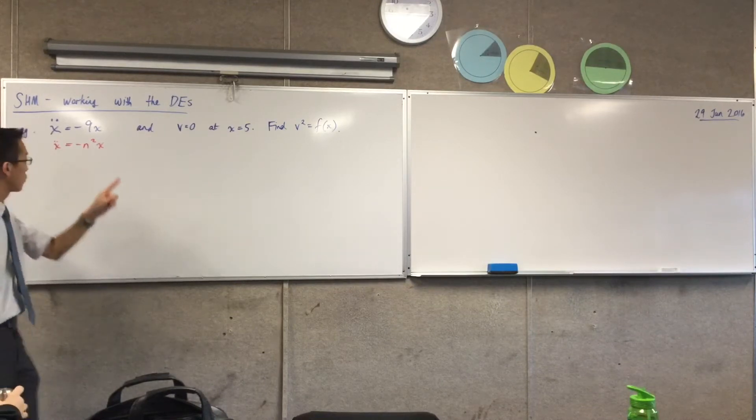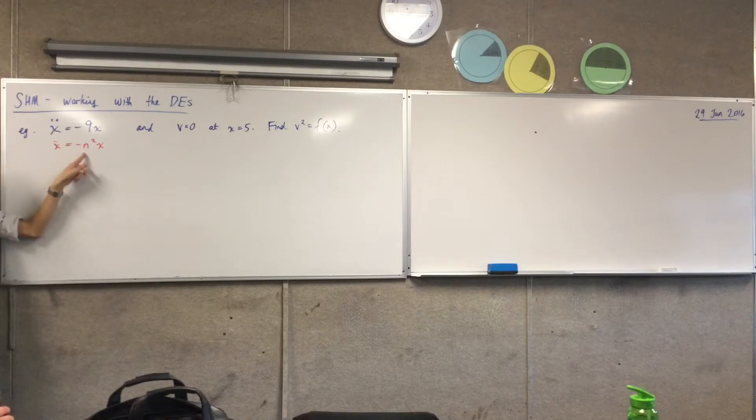Yeah, okay, so we're looking at this n squared here, right? We see that n must be 3.